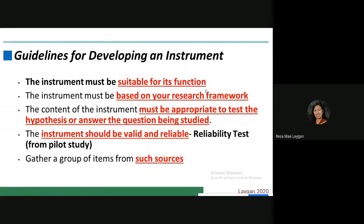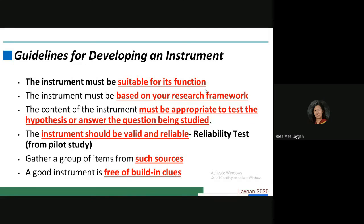Gather a group of items from reliable sources. A good instrument is free of built-in clues — it should not contain measures that function as hints for desired responses. The response given by each respondent should solely be their own, with no contamination from outside influences such as someone else's ideas. The respondent who agrees to participate is responsible for supplying information or exhibiting behavior that is truly their own.